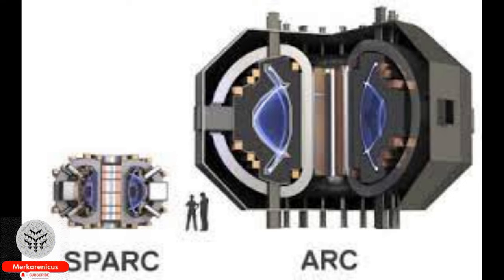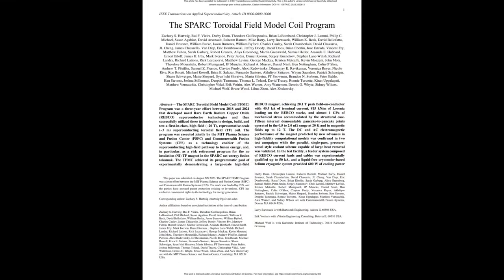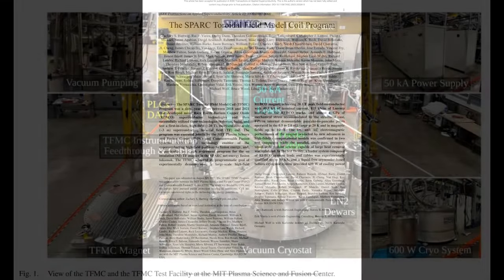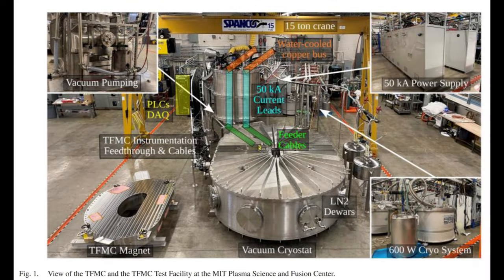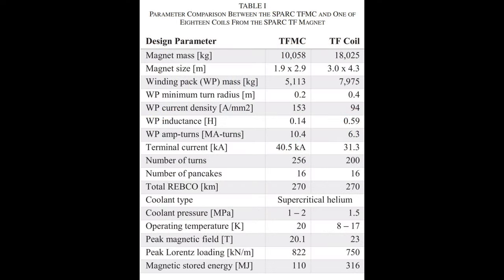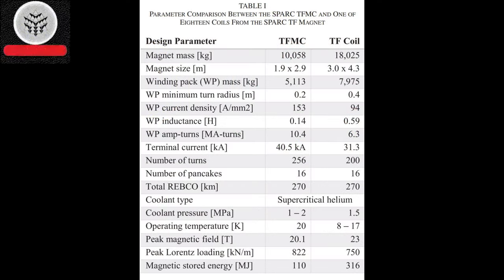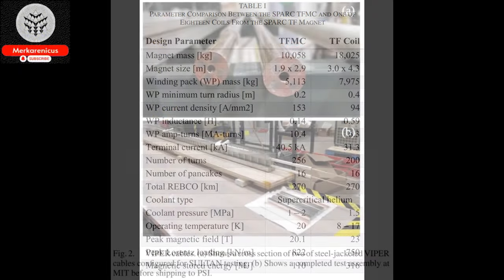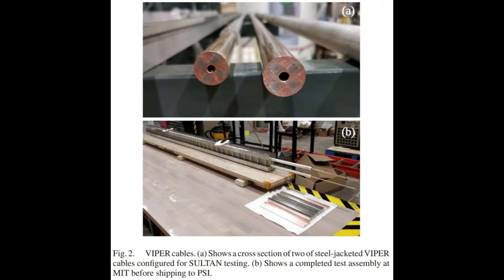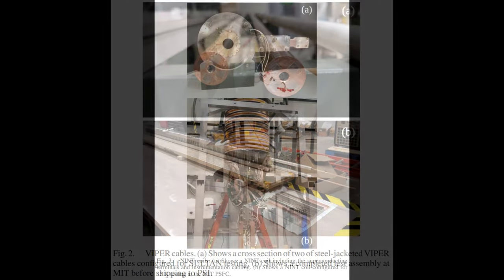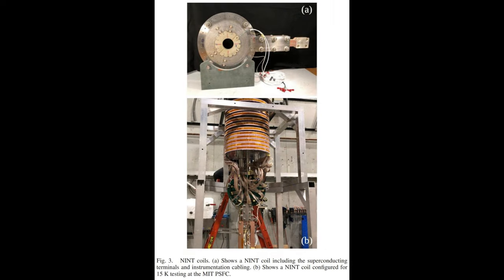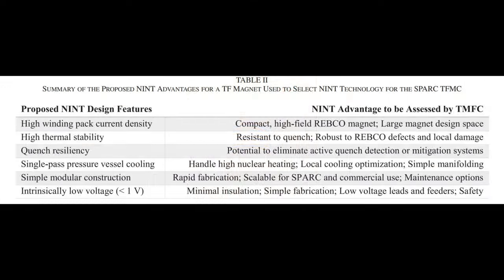The results of the tests indicate that high temperature superconducting magnets are now prepared for fusion applications. Today's video centers around an exciting breakthrough by MIT and Commonwealth Fusion Systems (CFS). They have successfully created a groundbreaking magnet using high temperature superconducting material. This magnet has achieved an impressive world record magnetic field strength of 20 Tesla, making it a significant advancement in the field of large-scale magnets.